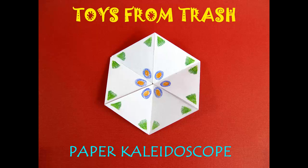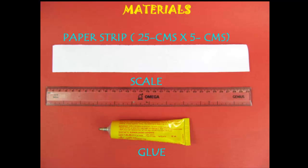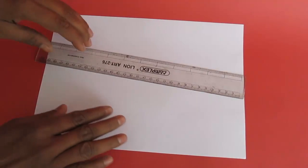You can make a kaleidoscope with just a strip of paper and explore the properties of reflection and symmetry without using any glasses.